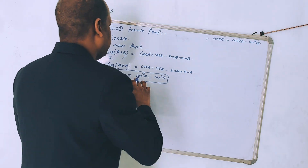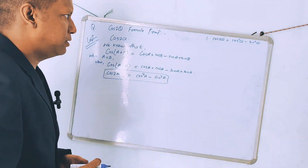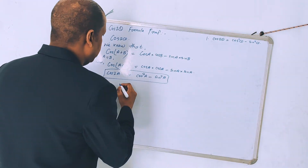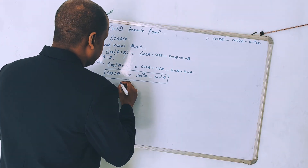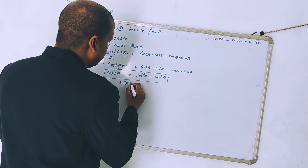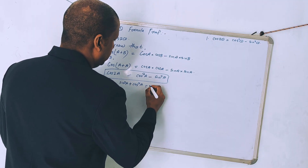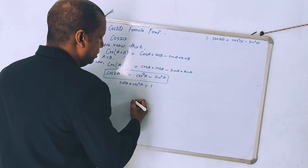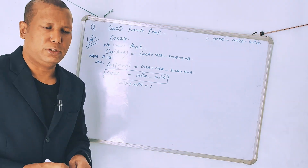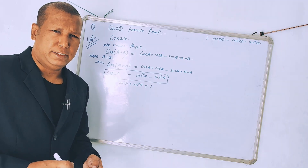So the first formula is: cos 2θ = cos² θ - sin² θ, putting θ in place of A. Next, we know that sin² A + cos² A = 1. This formula you should already know.